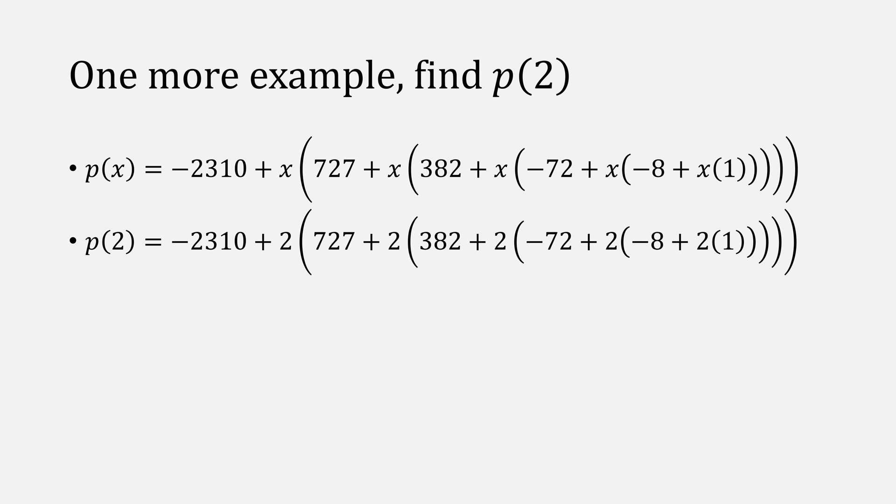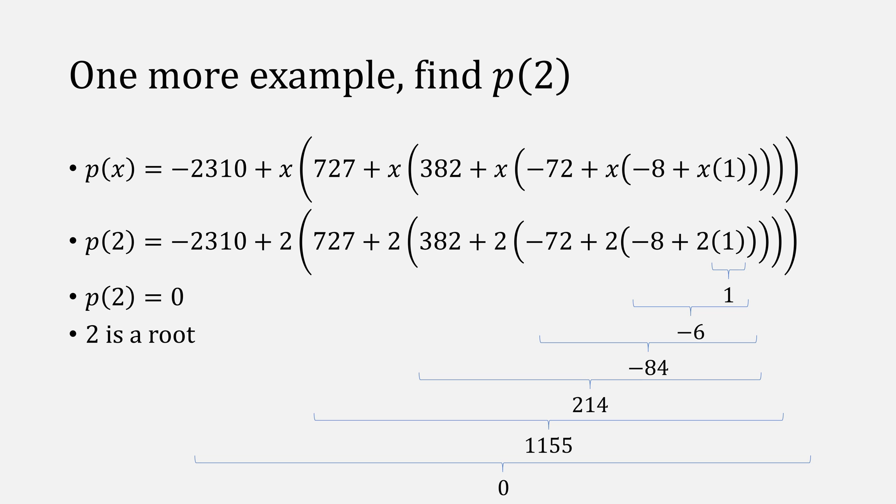Let's evaluate that same polynomial at another value. This case, two. We'll take our polynomial and plug in two. Now, I'm not going to show every operation here, but I want you to keep track of these numbers. First, 1, minus 6, minus 84, 214, 1155, and finally 0. So p of 2 is equal to 0. This means that 2 is a root.